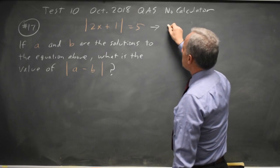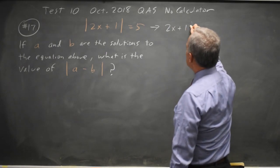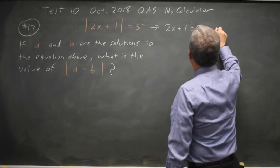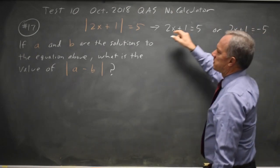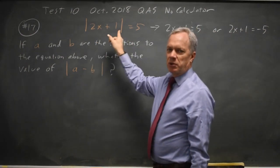So if this is true, either 2x plus 1 is 5 or 2x plus 1 equals negative 5, in which case the absolute value of 2x plus 1 would be positive 5.